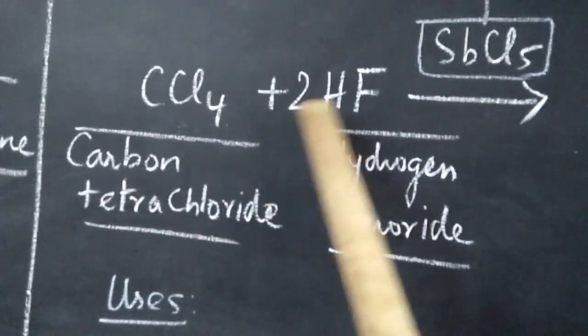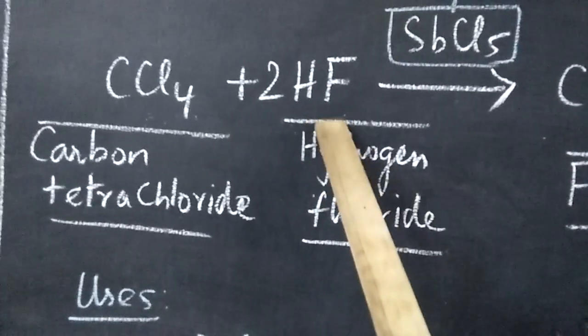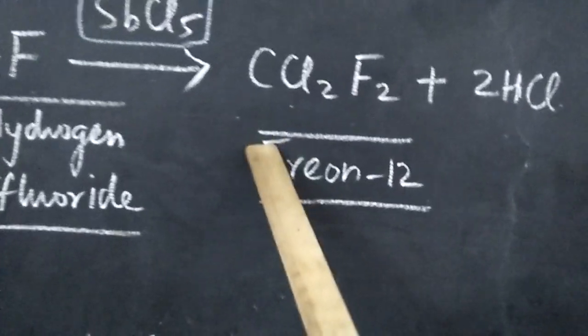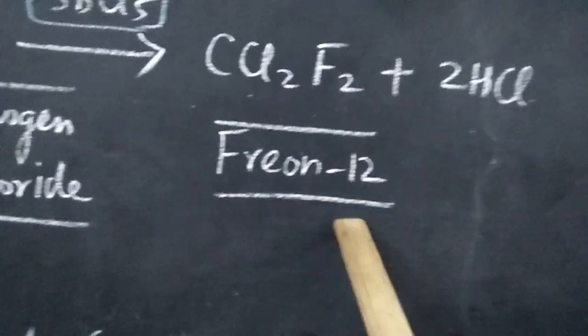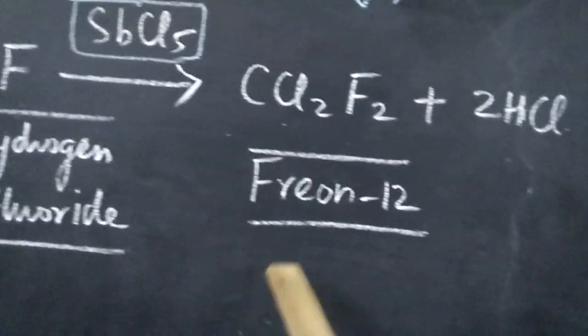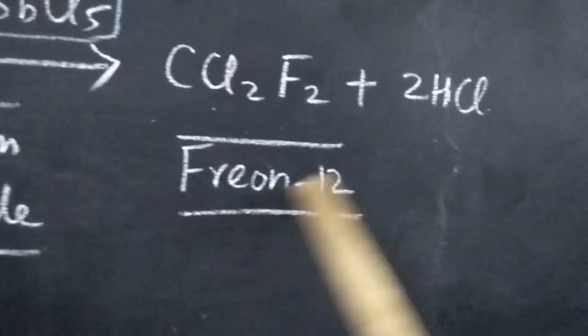Here the 4 chlorine atoms, out of the 4 chlorine atoms, 2 chlorine atoms are substituted by 2 fluorine atoms from hydrogen fluoride. Fluorine is more reactive, so the substitution is very common. CCl2F2 Freon-12 is formed. The substitution can be limited by the presence of the catalyst antimony pentachloride.